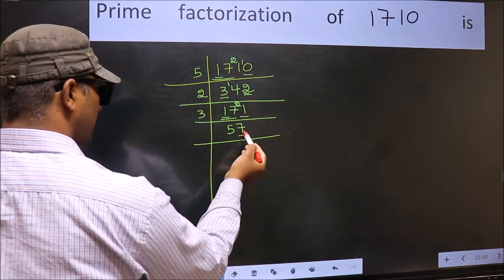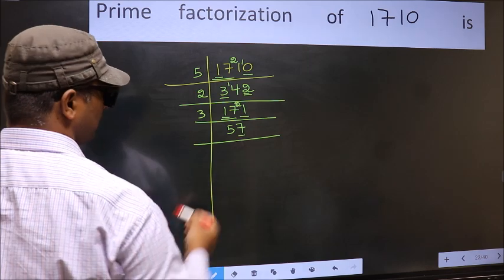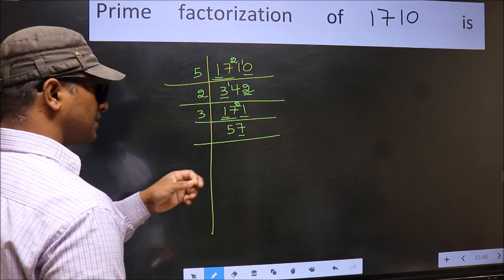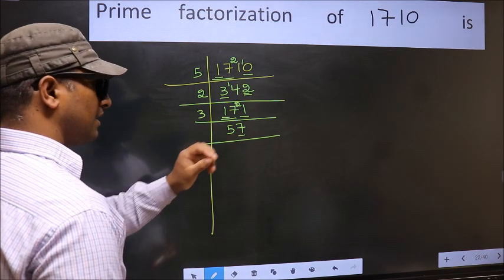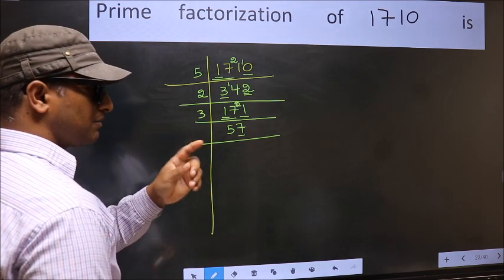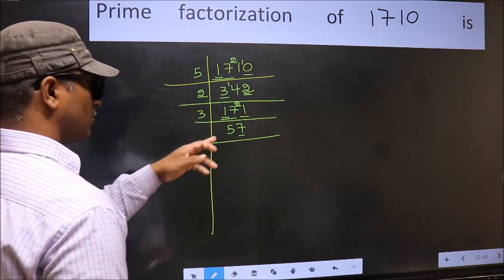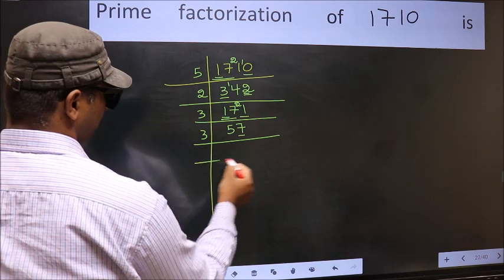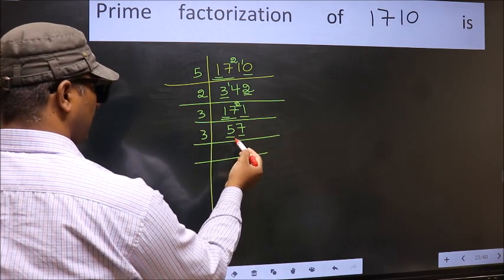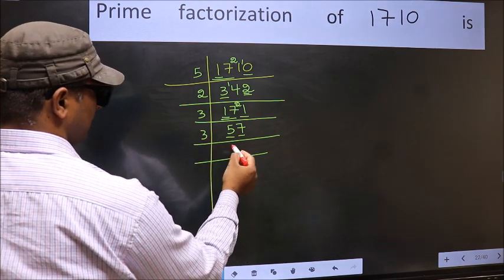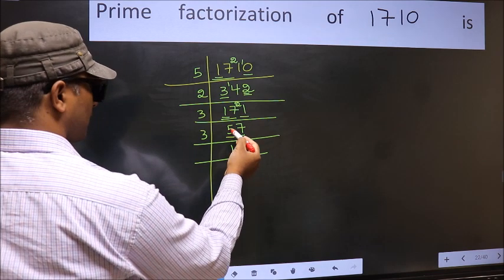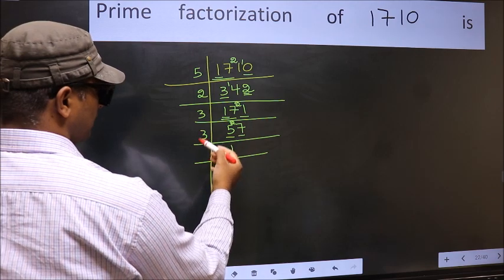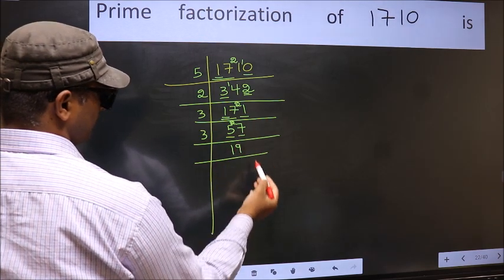Now the last digit is 7, which is odd, so not divisible by 2. To check divisibility by 3, add the digits. 5 plus 7 equals 12, and 12 is divisible by 3. So this number is also divisible by 3. So take 3 here. First number is 5. A number close to 5 in the 3 table is 3×1=3. 5-3=2, carry 2 forward to get 27. When do we get 27 in the 3 table? 3×9=27. So 57 ÷ 3 = 19.